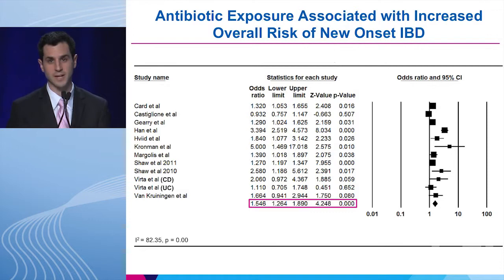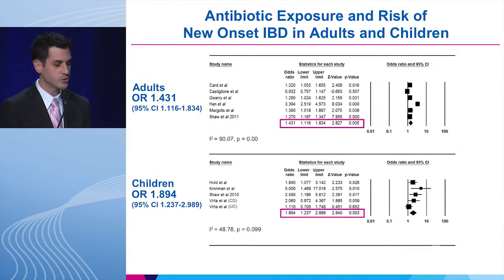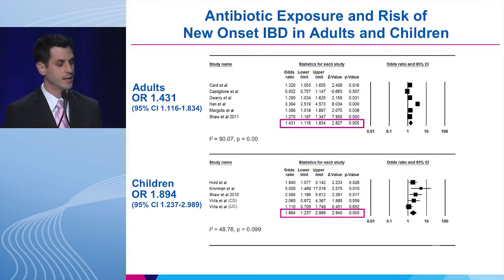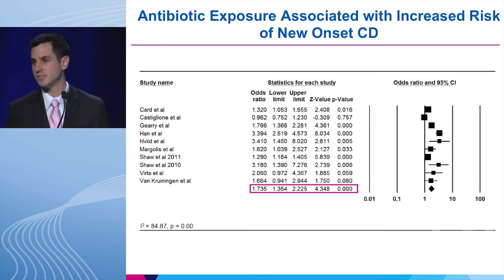When we pooled all studies together, antibiotic exposure was associated with an increased overall risk of new onset IBD, with an odds ratio of 1.54, which is statistically significant. When stratified by age, both adults and children had an increased risk of IBD after antibiotic exposure, with children appearing to have a slightly higher risk at an odds ratio of 1.89, compared to adults at an odds ratio of 1.43.